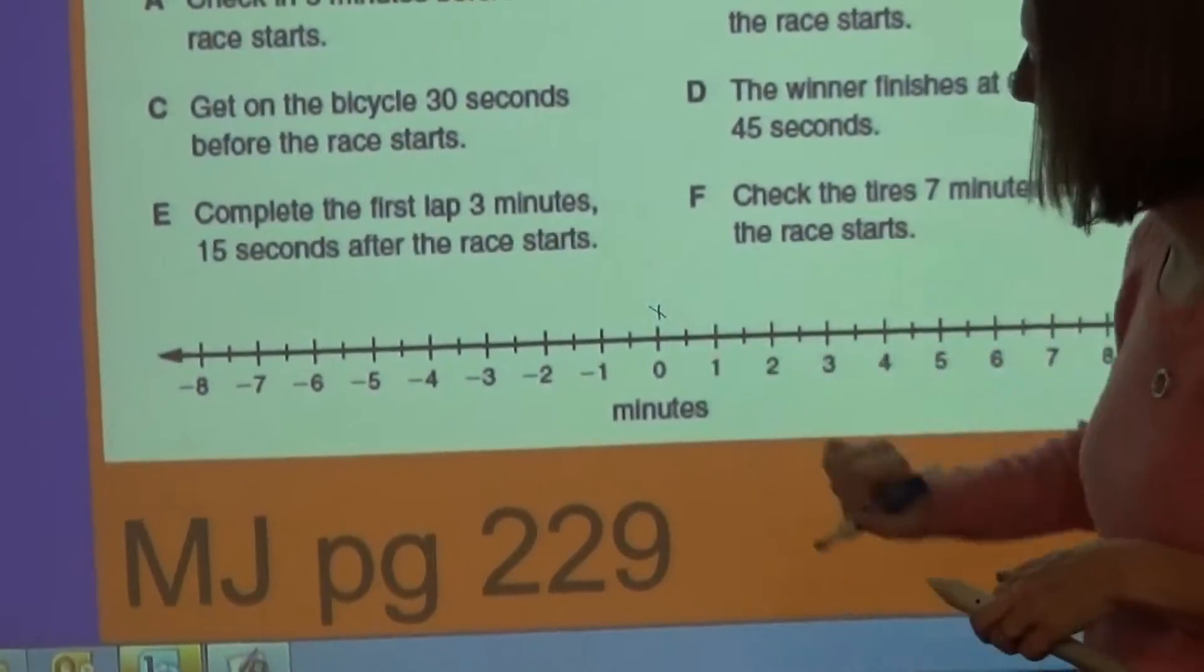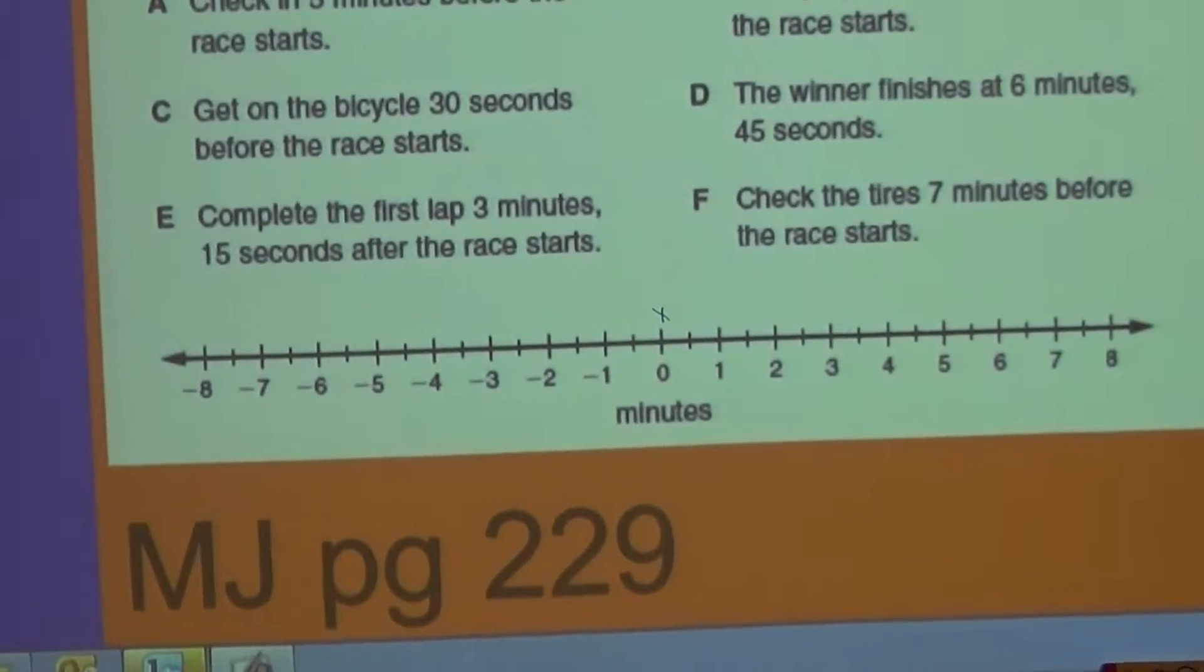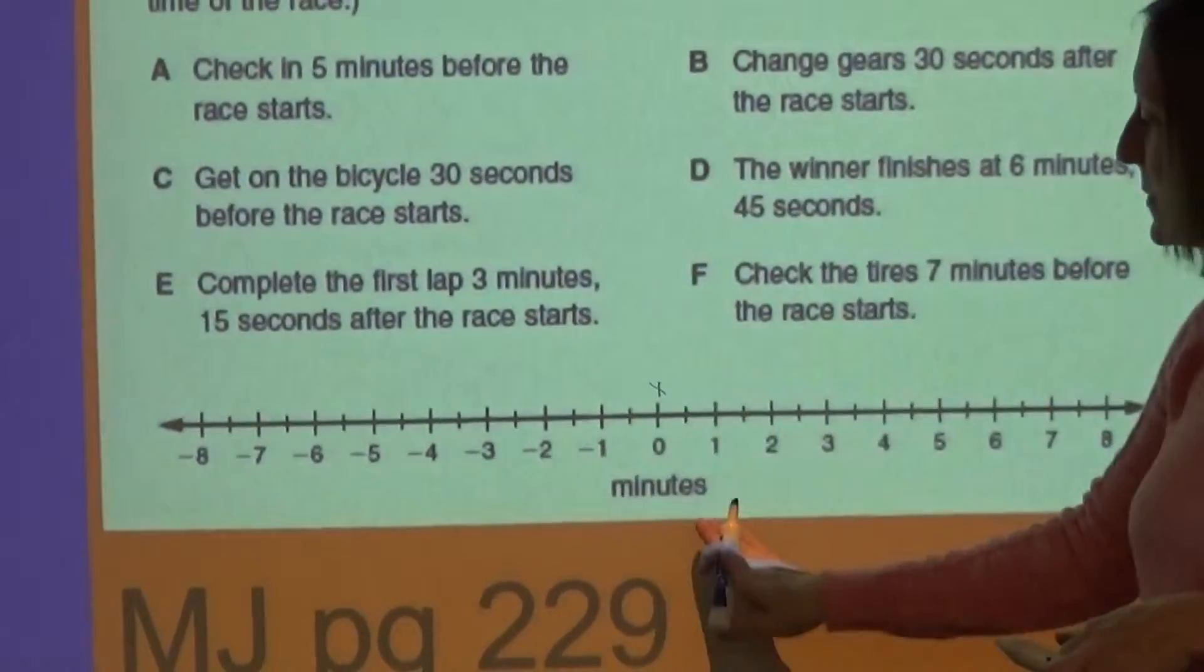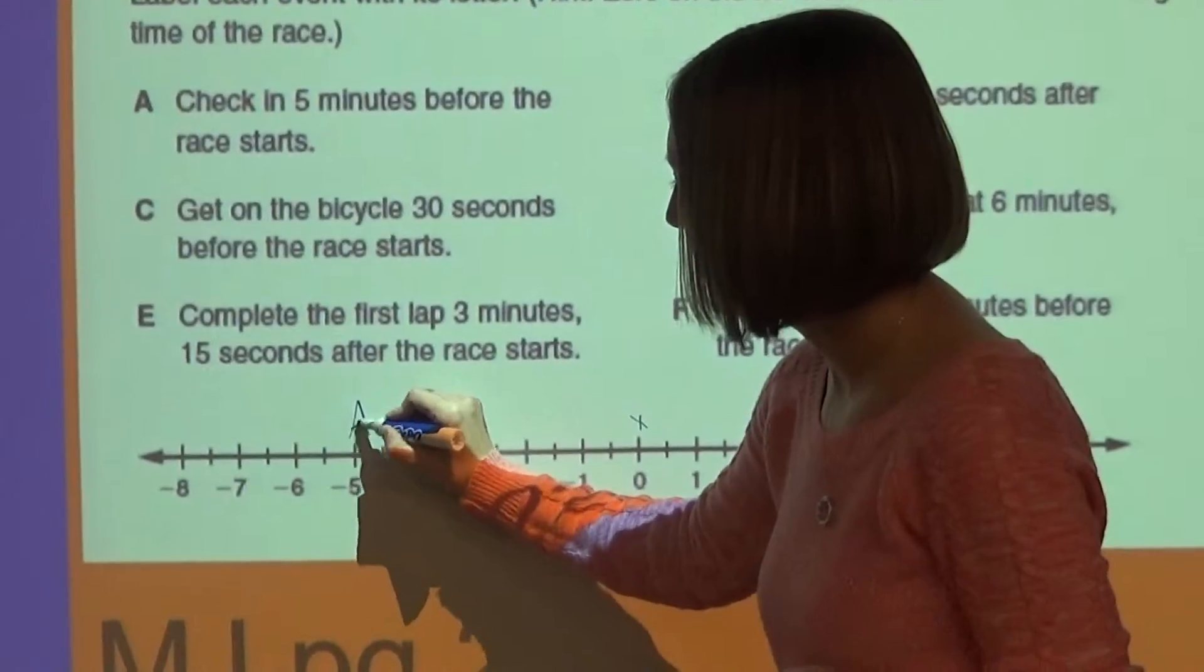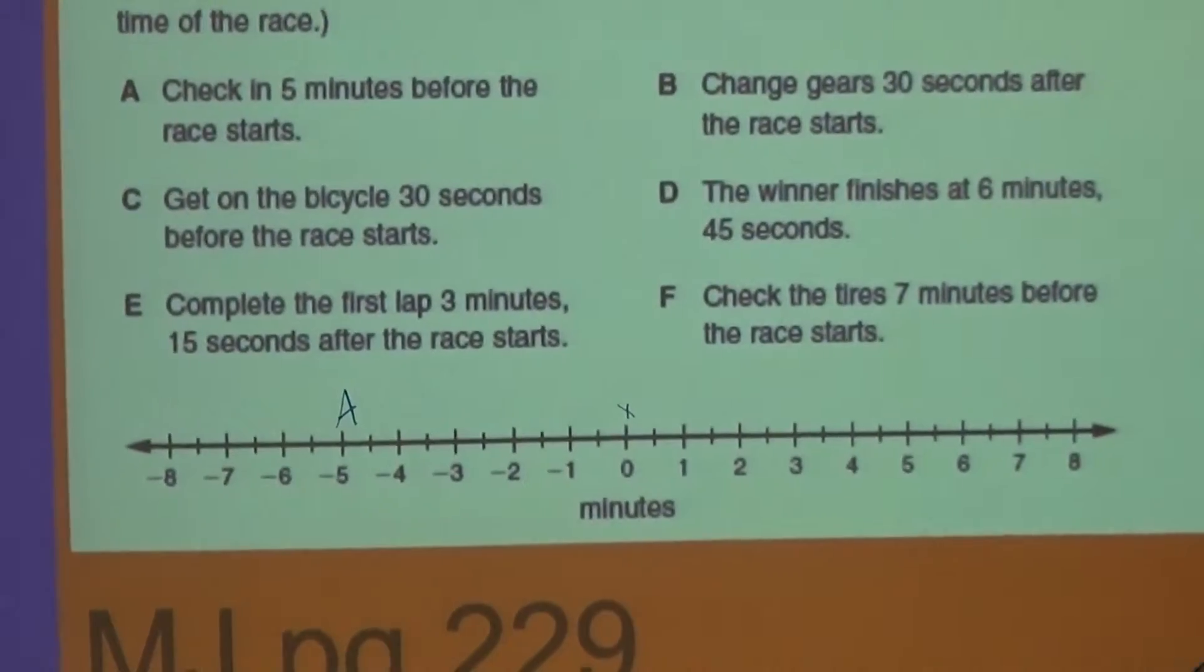So that's kind of our beginning point right there. If I want to have check in 5 minutes before the race begins, that would be like marking negative 5. So letter A, 5 minutes before the race.